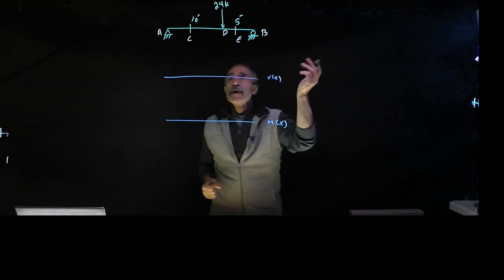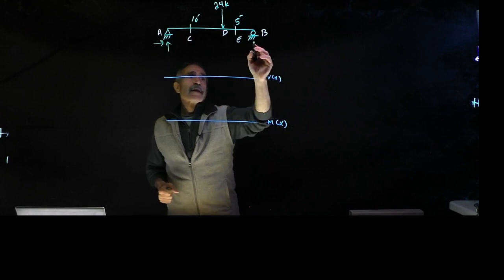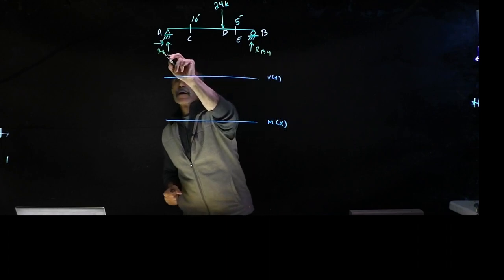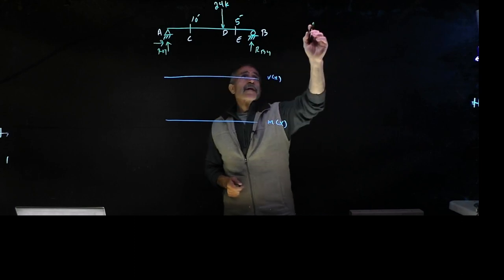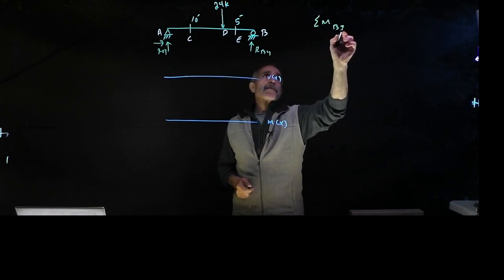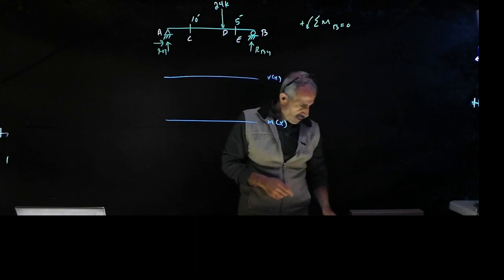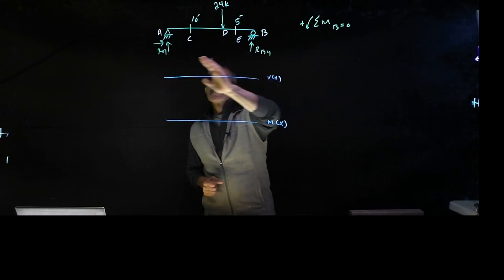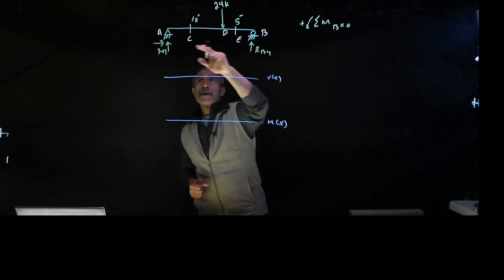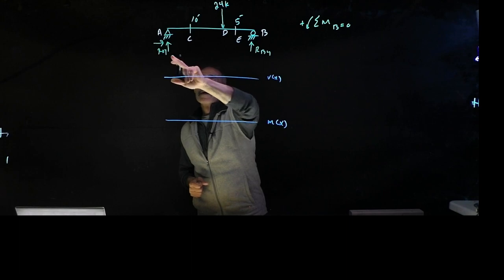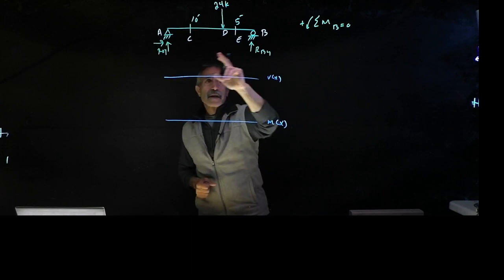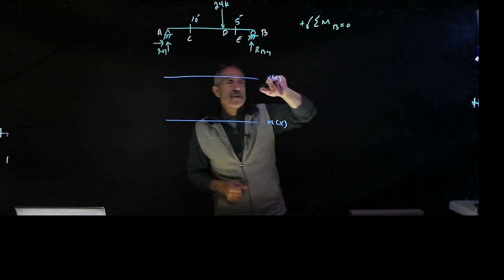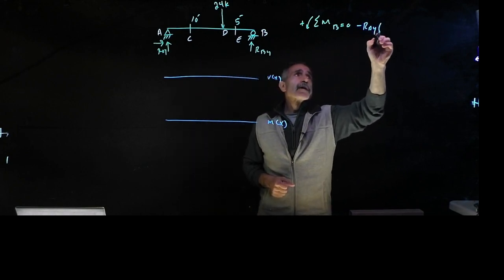Taking a moment about point B, doing a free body diagram, I have forces at A and B — RBY and RAY — and no horizontal force. Taking moment about B equals 0, going counterclockwise as positive. RAY is going to take a moment about point B clockwise, so it's negative. Minus RAY times 15 feet.